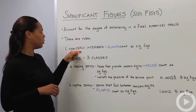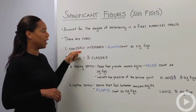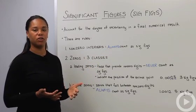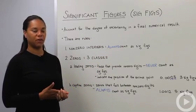The first rule applies to non-zero integers. Non-zero integers always count as sig figs. So if I have the number 1, 2, 3, 4, all four of those numbers will be significant figures.